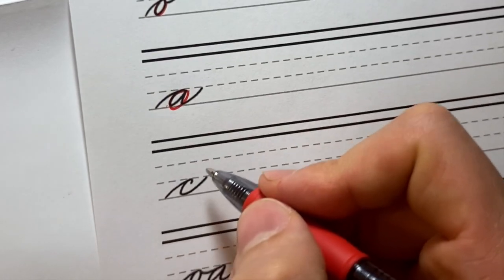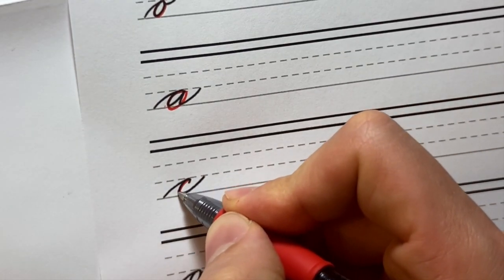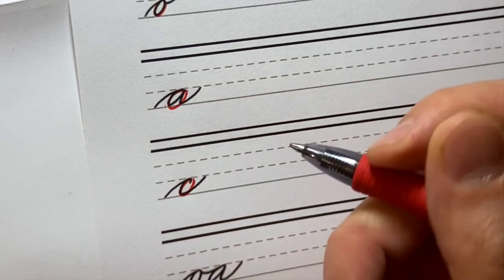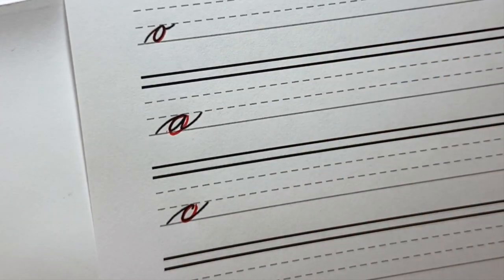And then the C, again, the back of the C is just like that rounded oval shape as well. Maybe a little straighter than our actual O, but it's really based on a part of that oval shape.